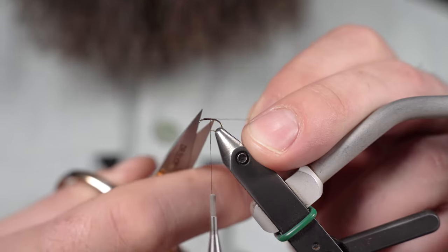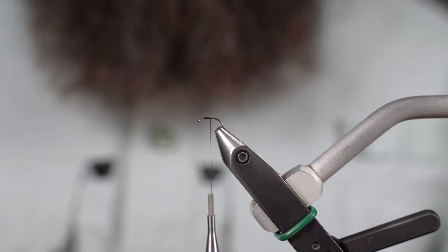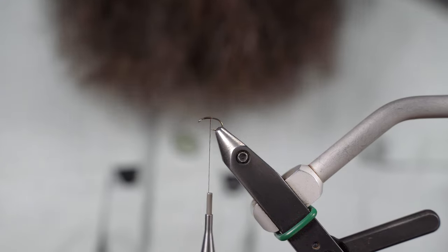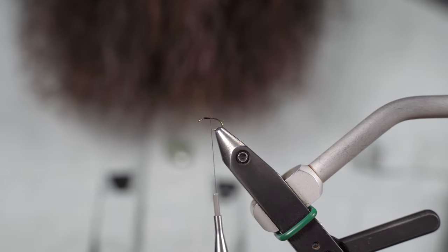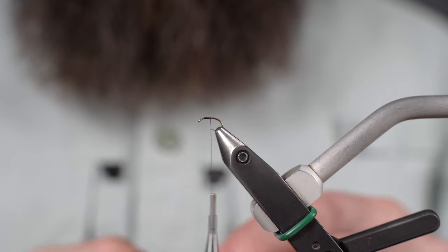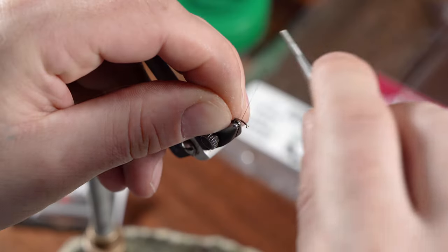I'm going to tie in the extra small copper wire here. You could probably use a small on this size of a fly, size of a hook.